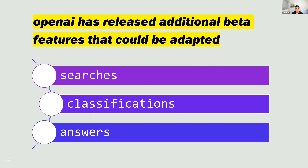In addition, OpenAI has released additional beta features that could also be adapted for security use cases: search, classifications, and answers. These are various ways of dealing with a dataset and giving a completion or output. For example, you can ask a question like 'based on this paragraph, which character feels angry?' These could be gradually integrated with fine-tuned models in the future.